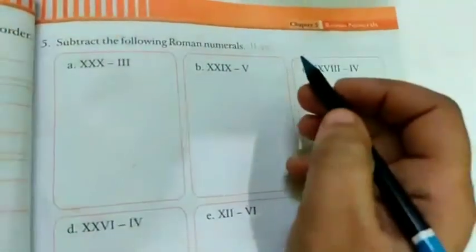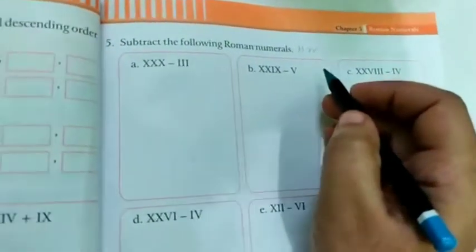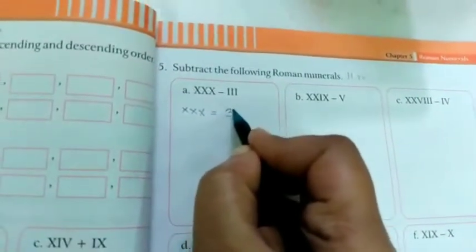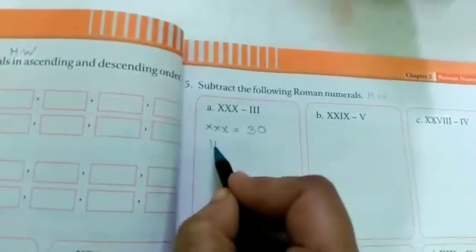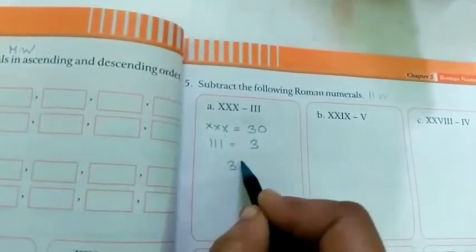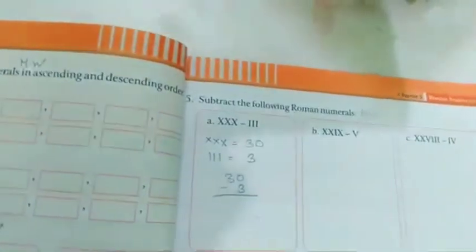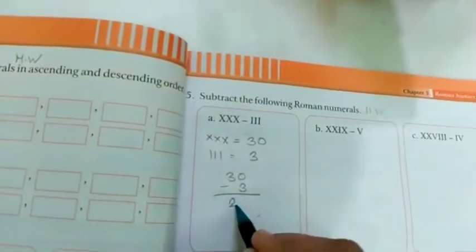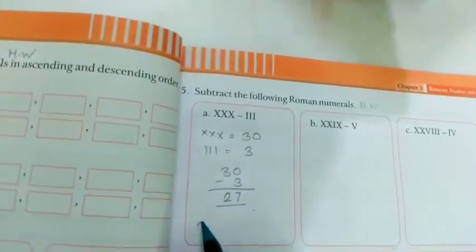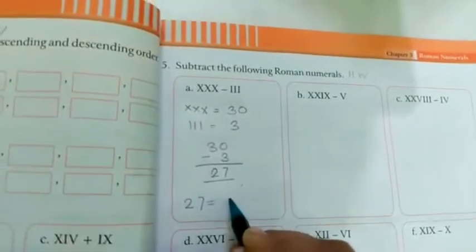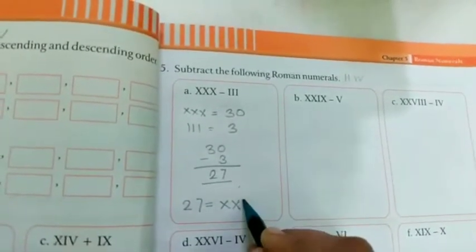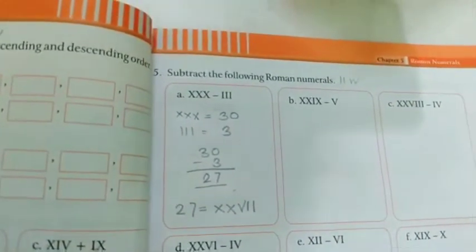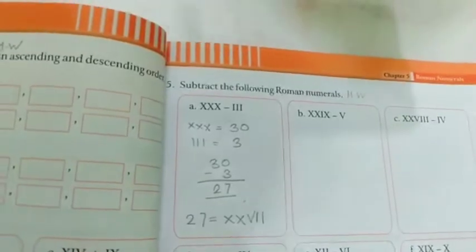Now see question number 5: subtract the following Roman numerals. Same as we have done. X, X, X that is equal to 30. And I, I, I that is equal to 3. So 30 minus 3, that is 27. So this 27 you have to write in Roman numerals: X, X, 20, 5, 25 and then I, I, that is 27. Like this you have to subtract.